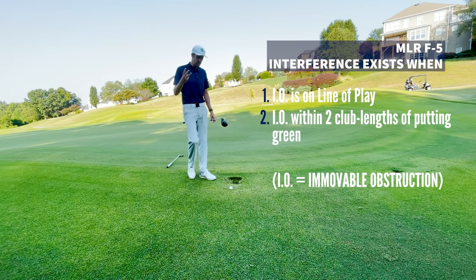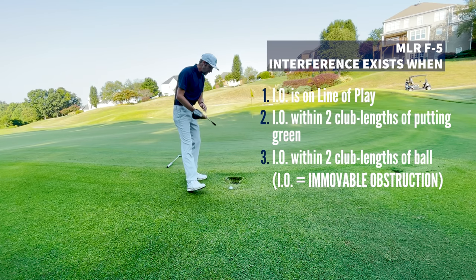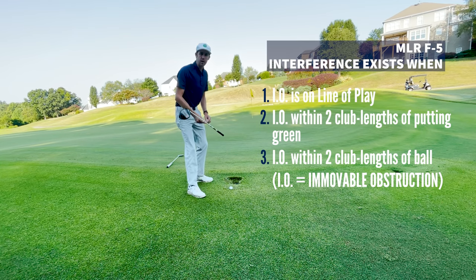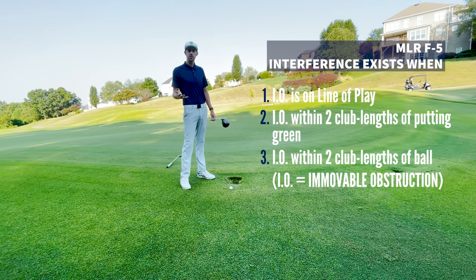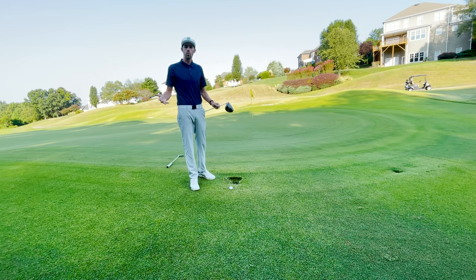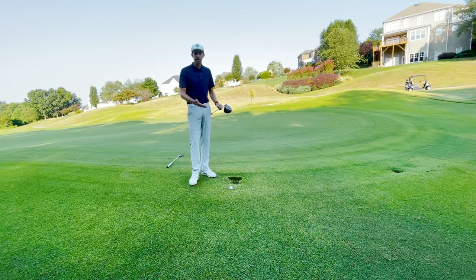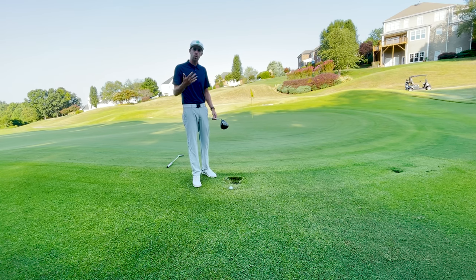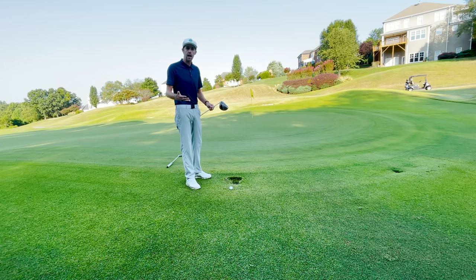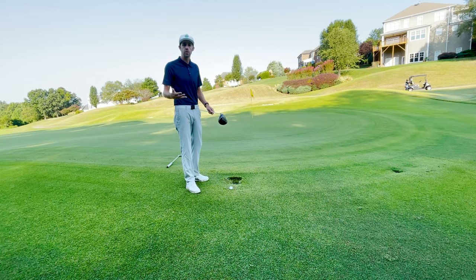Number three: my ball has to be within two club lengths of the sprinkler head, and we're well inside two club lengths, so we can check that off too. With all three conditions now satisfied, we're entitled to free relief under this local rule. We take that relief just as we normally would for an abnormal course condition — we find the nearest point of complete relief, and from that point we get a one club length relief area. The key difference here is that we're looking for the nearest point of complete relief for our line of play, since that's the interference this local rule is addressing.